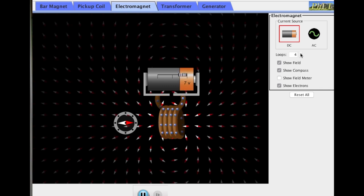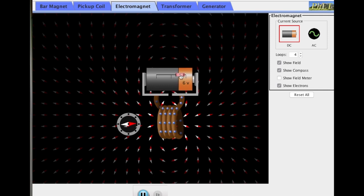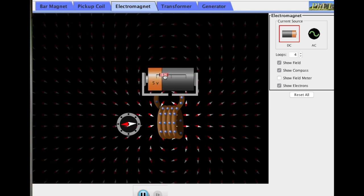What will happen if I flip the battery? This is something that the simulation shows really well. If I flip the battery the other way, the electrons roll the other way and the magnetic field flips as well.